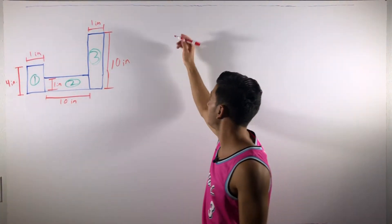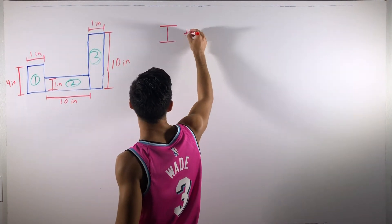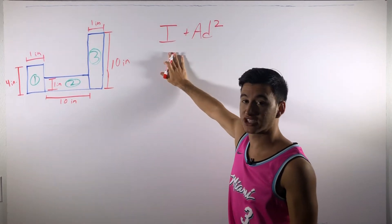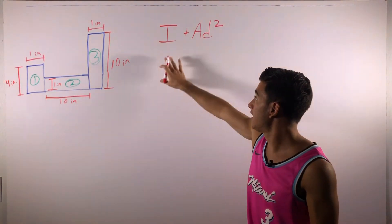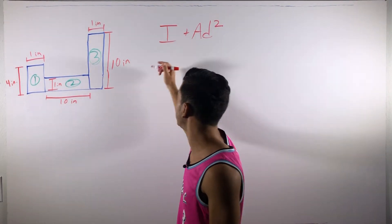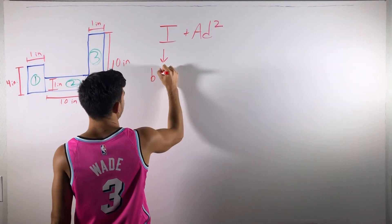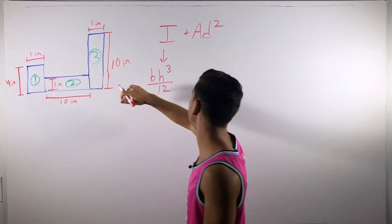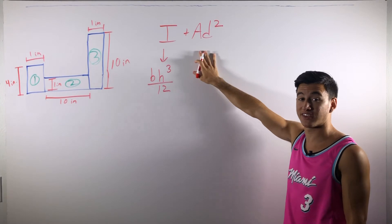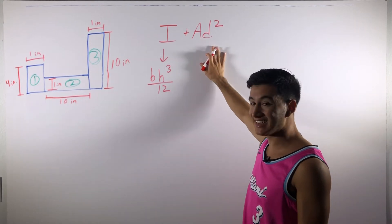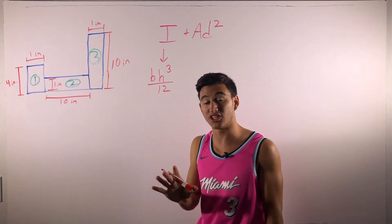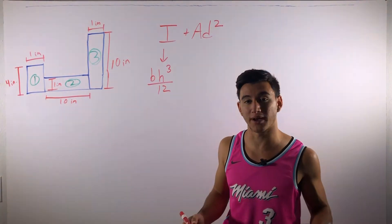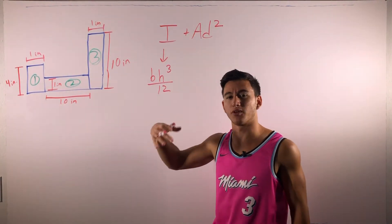What you need to remember for these kinds of problems is I plus AD squared. I can change based on the shape, whether it's a triangle, rectangle, or circle. But in this case we're dealing with all rectangles, and it's important to know that BH to the third over 12 would be the I for rectangles. A is just the area of the specific section we're working in, and D is the distance between the centroid of our specific section and whatever we're rotating it about. As we do the problem, it'll become more clear.